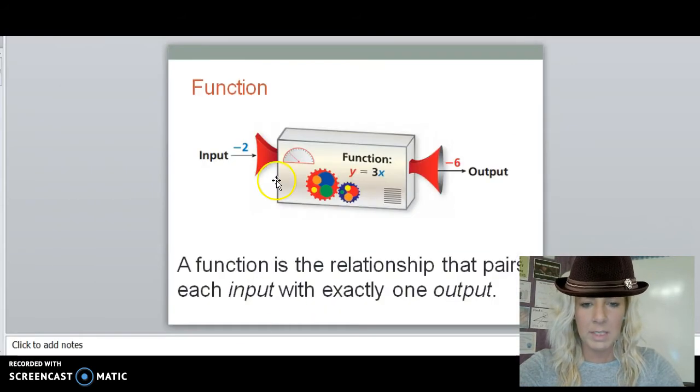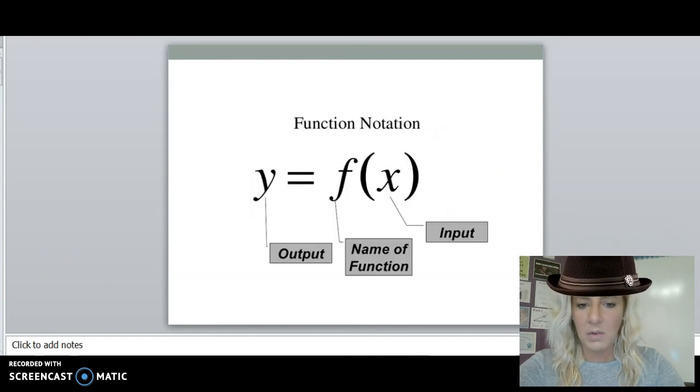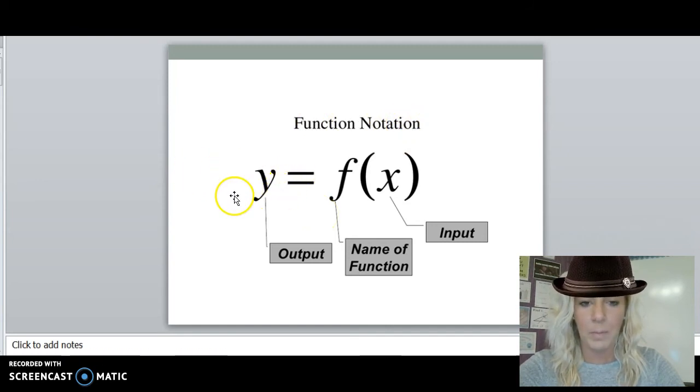So going back to here, if my input is negative 2, I can only get one output. Therefore, it's a function. This is kind of the fancy version of how to write it, and you'll see this a couple different ways. But this is function notation. This is kind of more the basics of algebra, how you might see it next year. So y is your output. This is called f of x. f is the name of the function, and x is our input.